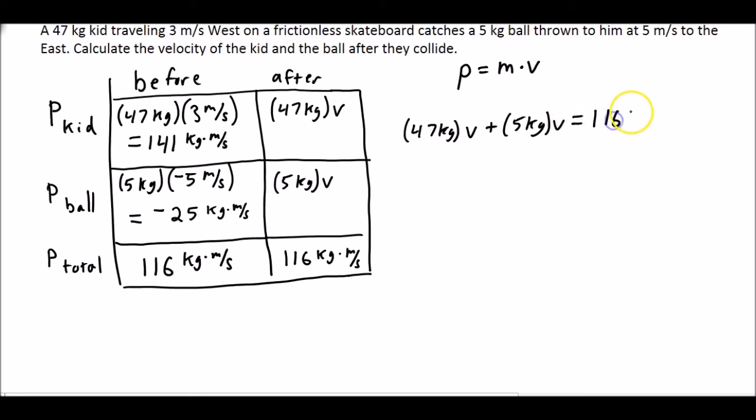That will equal 116 kilogram meters per second. So we can add 47 plus 5 gives us 52 kilograms times the velocity is equal to 116 kilogram meters per second.